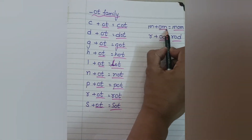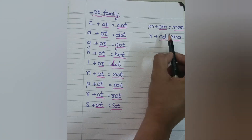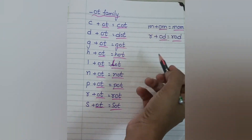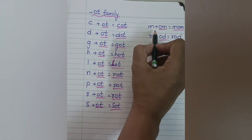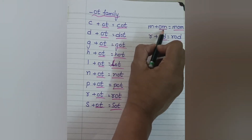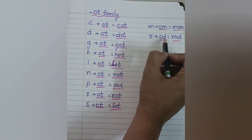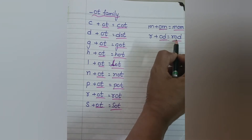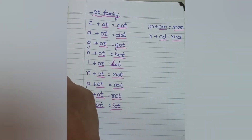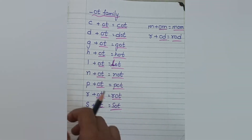Here there are only one or two words, so I have not written the full family for these. We will read them directly. M, OM — mom. L, OD — rod.